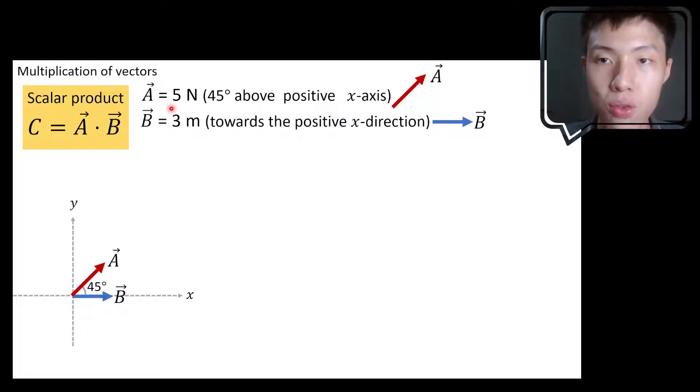But what I'm going to do now is, instead of saying that vector A is 5 N 45 degrees above the positive x-axis, I'm going to modify vector A. So now I will change vector A to become 45 degrees above the negative x-axis.